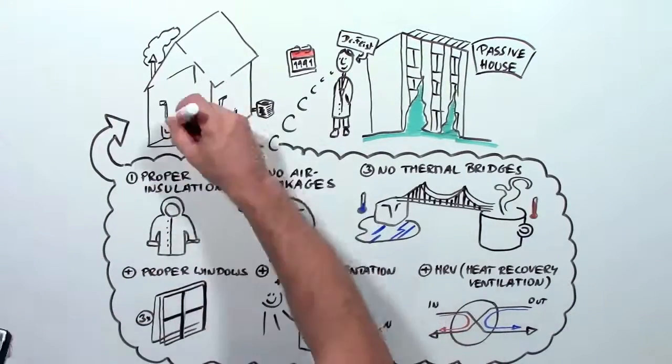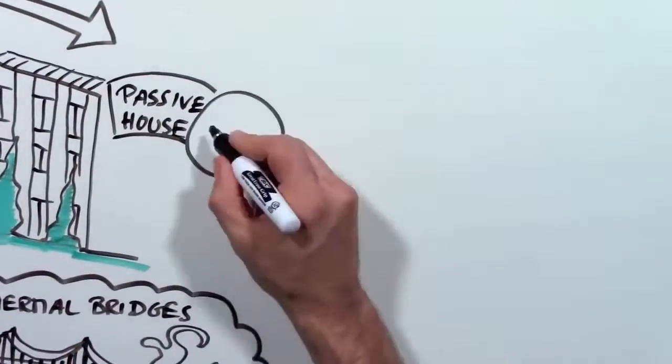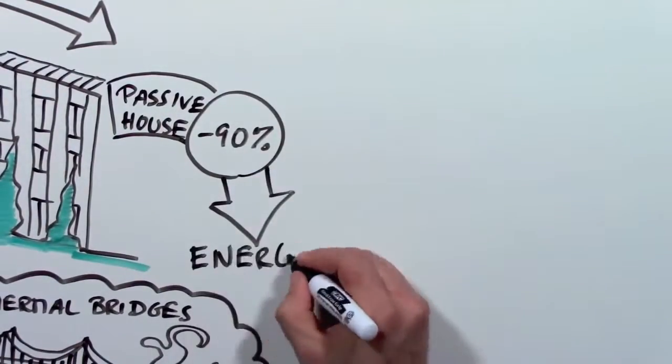Add all these things up, and it turns out your house doesn't need a heater or air conditioner. So where does the heat come from? A Passive House needs 90% less energy,